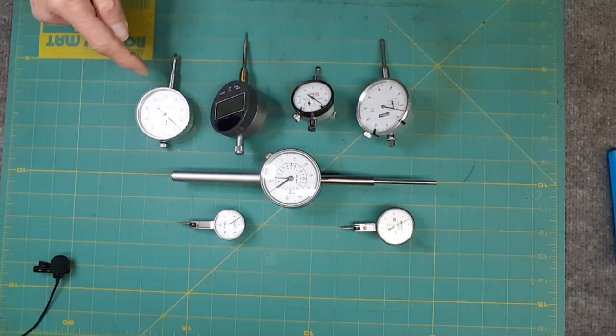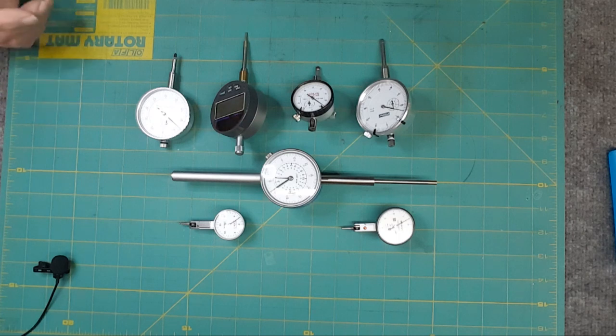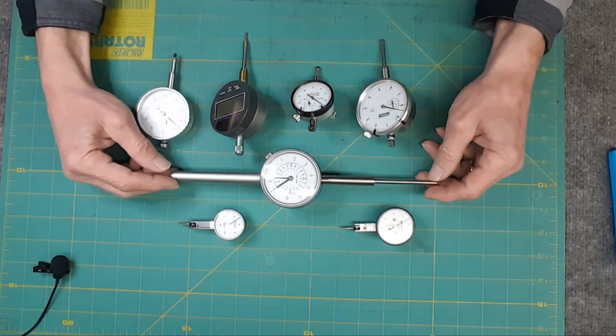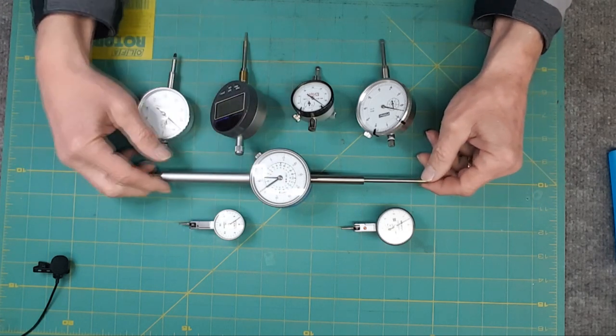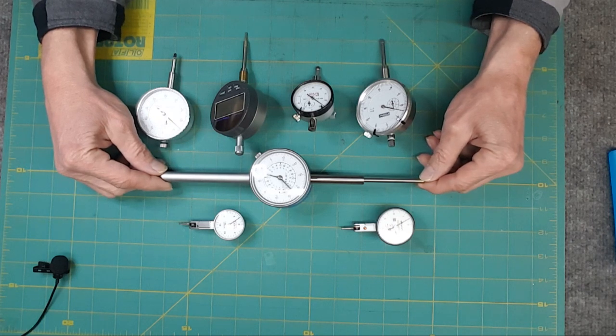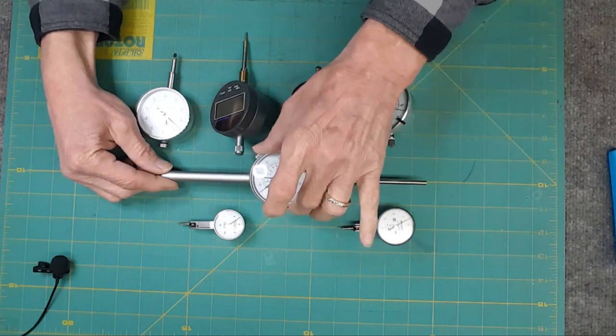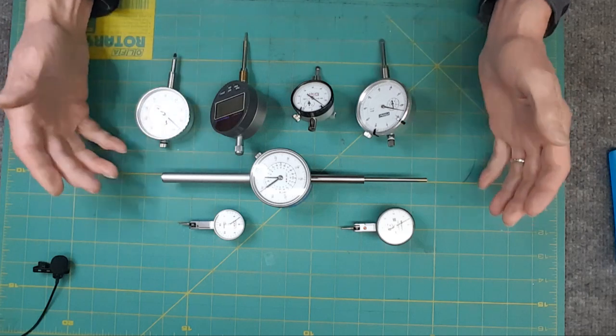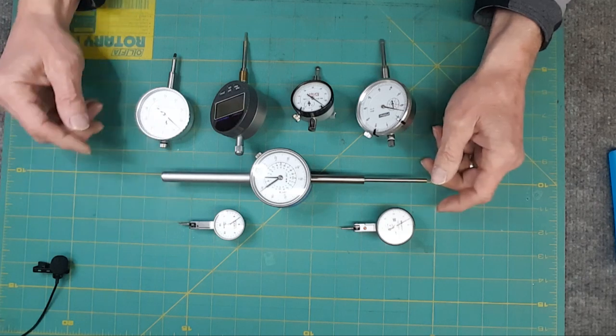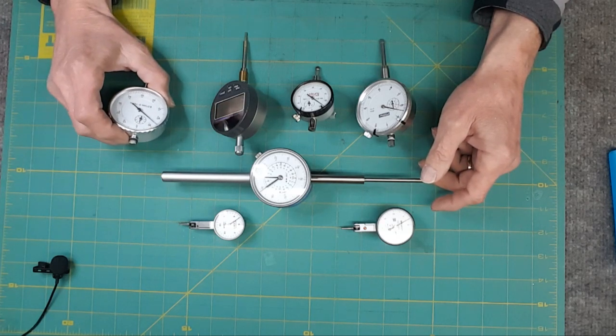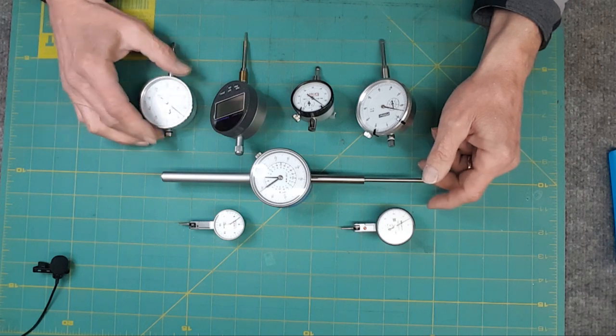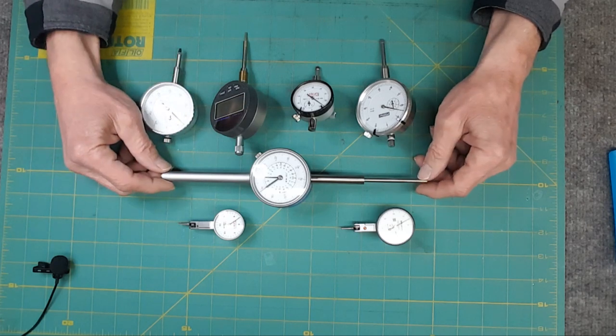Next up we have dial indicators and test indicators. And again, depending upon what you're doing in your shop, you may or may not need one. Typically, as far as accuracy is concerned, dial indicators, it depends on how many revolutions you do on the dial. Two to three revolutions, they're typically only accurate to a thou.